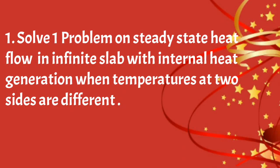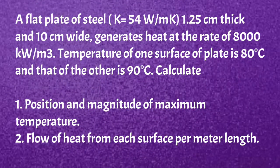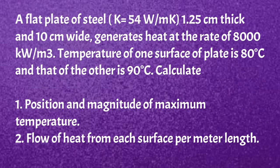The first question is to solve a problem on steady state heat flow in an infinite slab with internal heat generation when the surface temperatures on two sides are different. A flat plate of steel with K equal to 54 Watt per meter Kelvin, 1.25 cm thick and 10 cm wide, generates heat at the rate of 8000 kW per meter cube. Temperature of one surface is 80°C and the other is 90°C. Calculate: 1. Position and magnitude of maximum temperature. 2. Flow of heat from each surface per meter length.